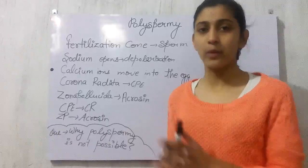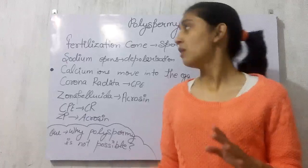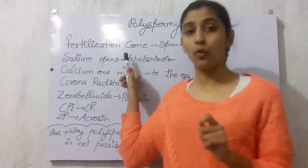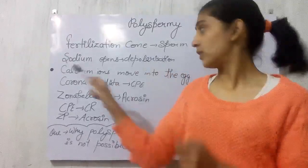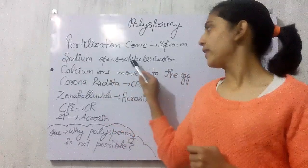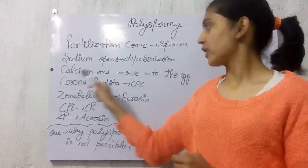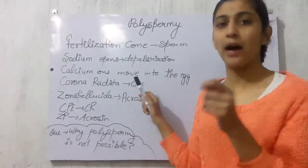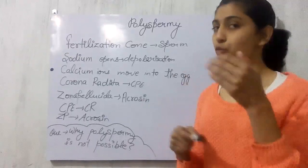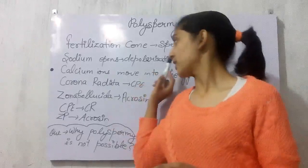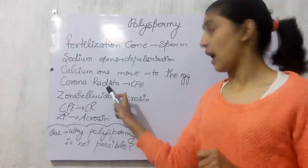What is the basic mechanism that prevents polyspermy? When the fertilization cone comes into contact with a sperm, the sodium ion channels will open and they will lead to the depolarization of the membrane. Just after this, calcium ion channels will open and calcium ions will move into the egg membrane.